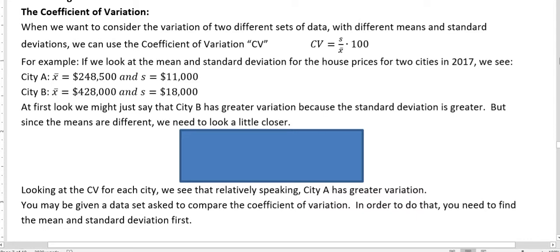For example, if we look at the mean and standard deviation for house prices in two cities in 2017, we see City A has a mean of $248,500 and a standard deviation of $11,000. City B has a mean of $428,000 and a standard deviation of $18,000.